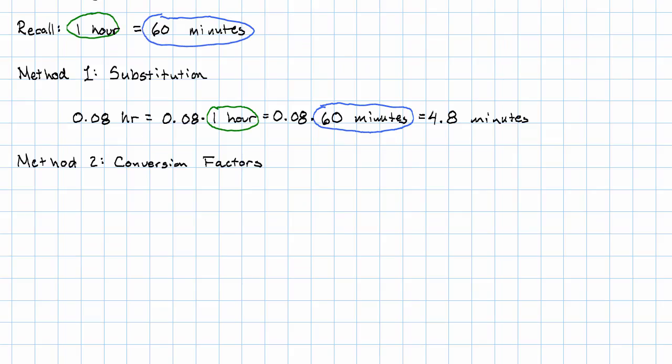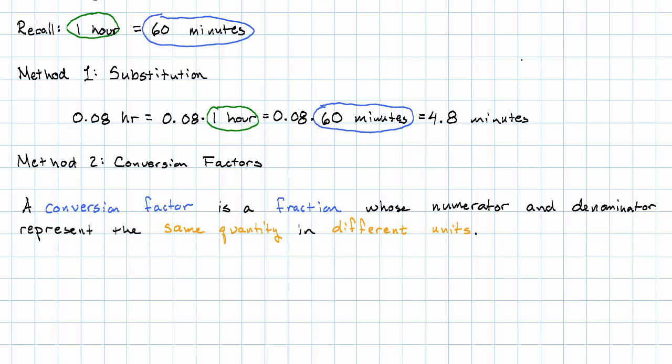The second method is called using conversion factors. Now a conversion factor looks like a fraction, but its numerator and denominator are the same quantity represented in different units. For example, one hour over 60 minutes or 60 minutes over one hour are two examples of conversion factors. Notice one hour and 60 minutes are different ways of describing the same amount of time.